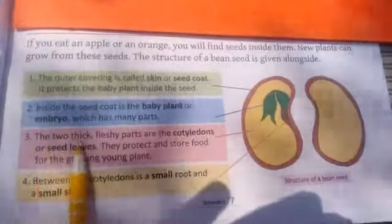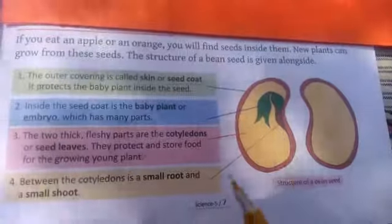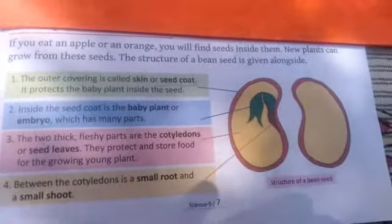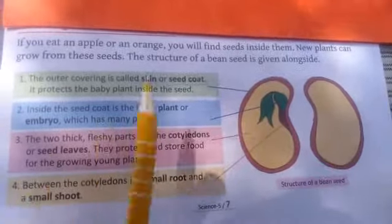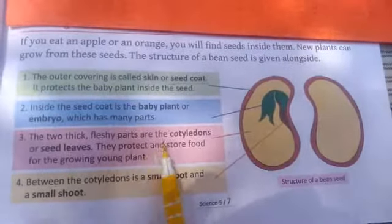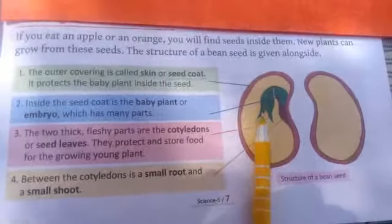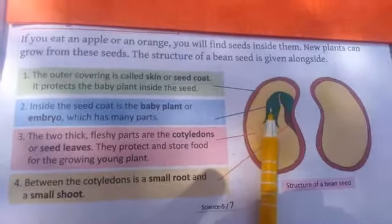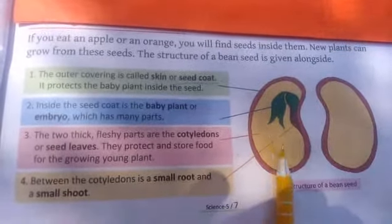The third part — the two thick fleshy parts are the cotyledons. There are two cotyledons. The function of the cotyledons is that they protect and store food for the growing young plant. This growing baby plant needs nutrition, and it will get that nutrition from the cotyledons.